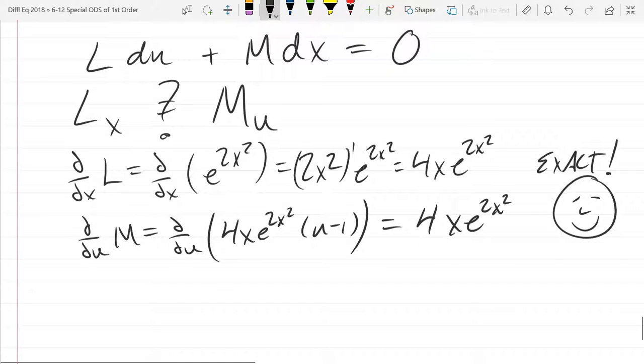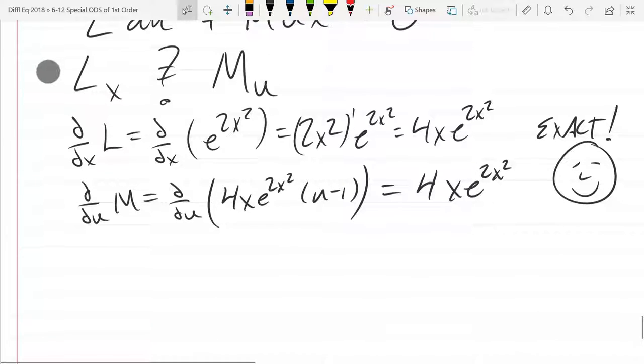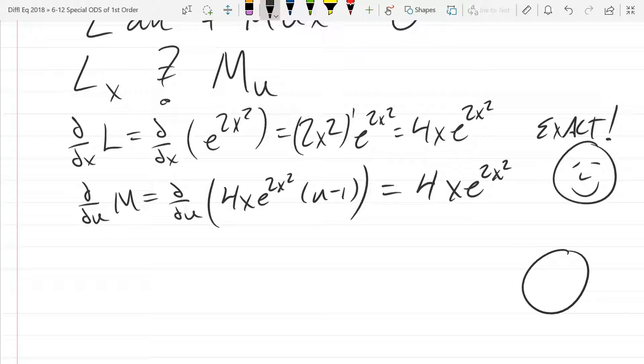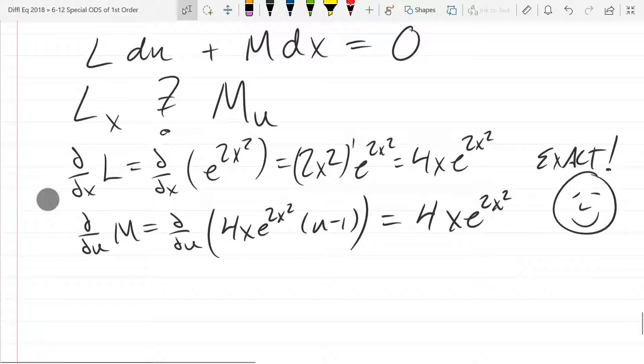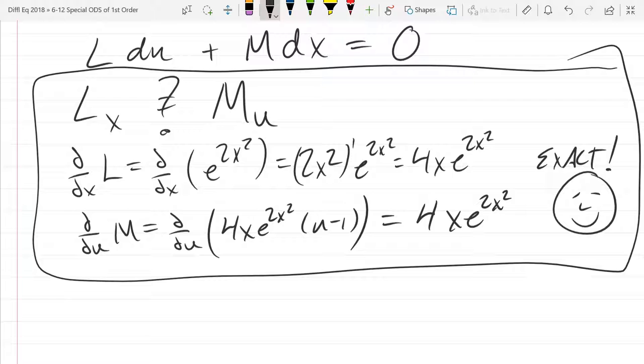Alright. So you should be happy when things are exact. Because it's super easy to solve. That's the happy face. Because I would say linear coefficients are probably the worst. That's my angry face. Exact is easy. Alright. You need to take the anti-derivatives of L with respect to x and M with respect to u. So this is basically separable. This is separable check.